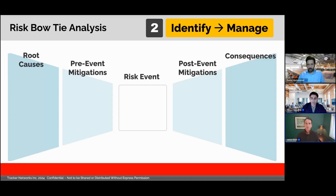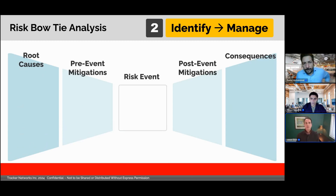The diagram would typically get completed by subject matter experts, either working on their own or in a workshop setting. The risk event that you're concerned about goes in the middle, and then you can map your root causes, precipitating events, or conditions on the far left. You then identify and map the potential consequences on the far right, and then you can map your controls or mitigations as being either pre-event or post-event.